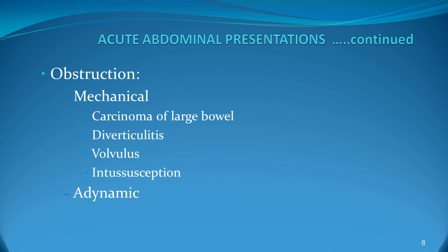Intestinal obstruction could be mechanical or it could be adynamic obstruction. Mechanical obstruction, like carcinoma of the large bowel — the patient could have a history of obstruction, altered bowel habit, constipation, and bleeding per rectum. In diverticulitis, the patient may have an on-and-off history of left iliac fossa pain and can present with rectal bleeding in diverticulosis. Old age patients may present with a massive GI bleed.